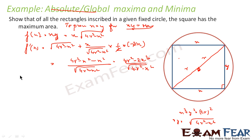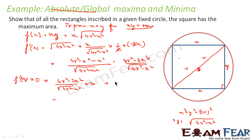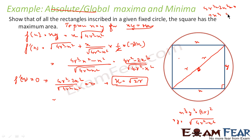Setting f'(x) = 0: (4r² - 2x²) / √(4r² - x²) = 0. Since the denominator is not zero, we solve 4r² - 2x² = 0, giving x² = 2r², so x = √2·r. We take the positive root since x is a length.